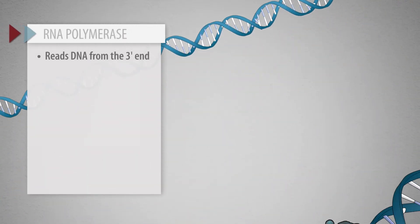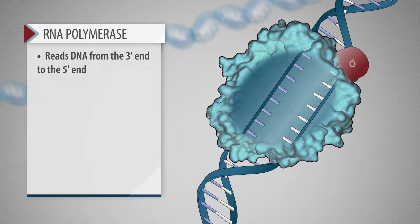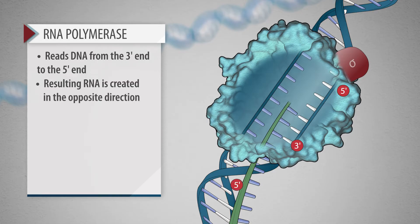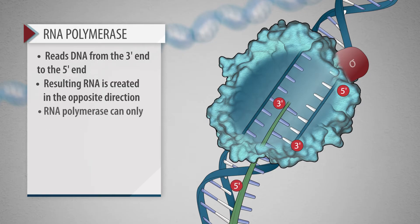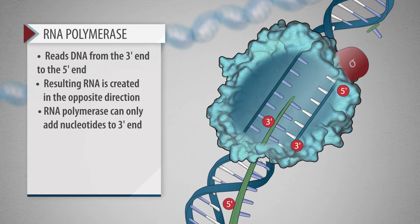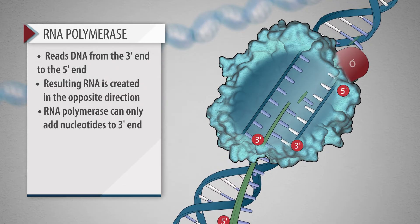The DNA is read by the RNA polymerase from the three-prime end to the five-prime end during transcription. The resulting RNA is created in the opposite direction, from the five-prime end to the three-prime end. This reverse directionality is because RNA polymerase can only add nucleotides to the three-prime end of the growing messenger RNA chain.